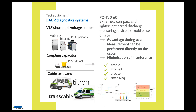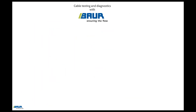Checking cable routes with the PDTAT60 is simple, efficient, and precise. It also saves time because the dissipation factor measurement and partial discharge testing are performed in parallel. A comprehensive checking of newly laid or repaired cables, as well as general condition evaluation, can therefore be performed quickly and simply in a single operation without significant extra expense. This means that the cable only has to be loaded with the test voltage once. Cable testing and diagnostics with Baur measuring devices can be used for the testing of both new and worn cable routes, whilst adhering to all relevant standards.